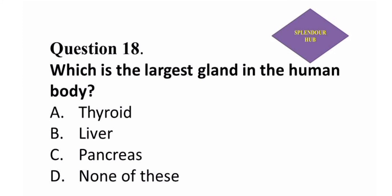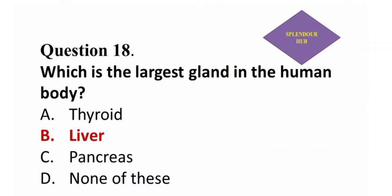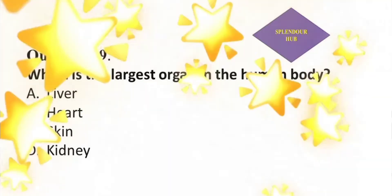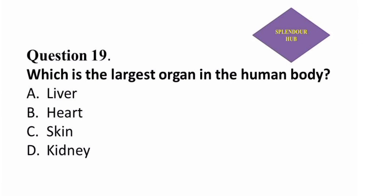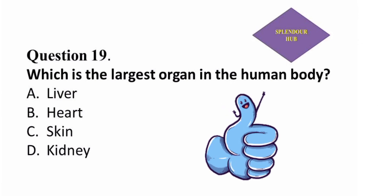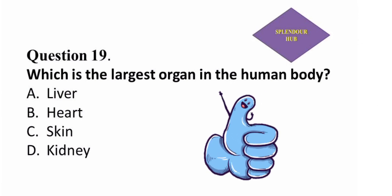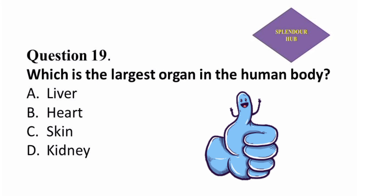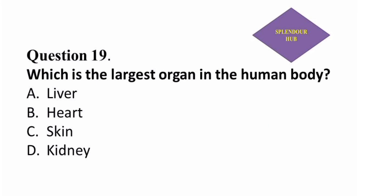Question 18: Which is the largest gland in the human body? — option A: thyroid, option B: liver, option C: pancreas, option D: none of these. Answer: The largest gland in the human body is liver.